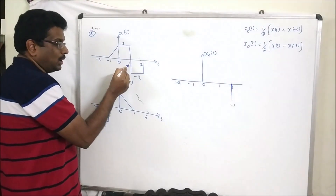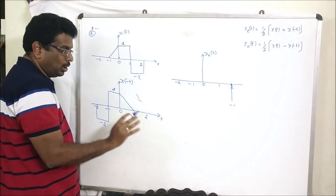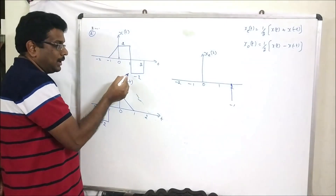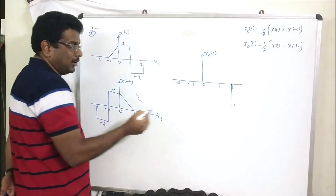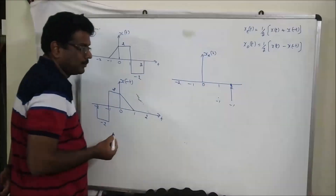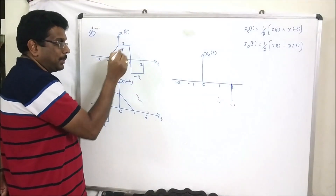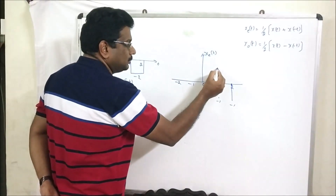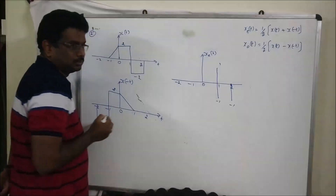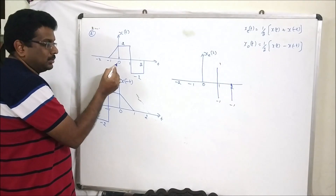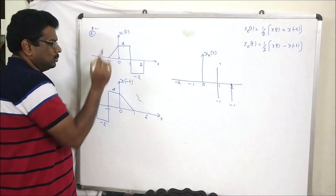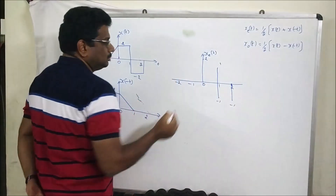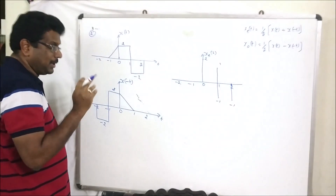At location 1, one signal gives 0, but there are two amplitudes on the other side. From the right side it is minus 2: minus 2 plus 0 divided by 2 equals minus 1. From the left side it is 2: 2 plus 0 divided by 2 equals 1. At location 0, the value here is 2 and the value here is 2. 2 plus 2 equals 4, divided by 2 equals 2.